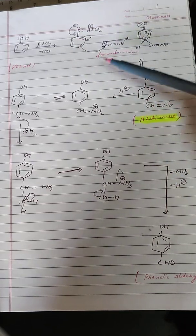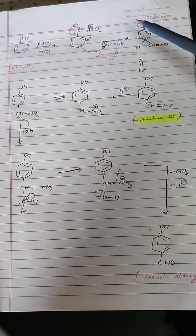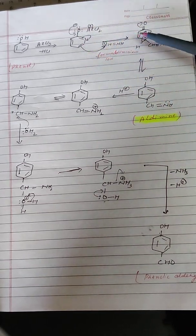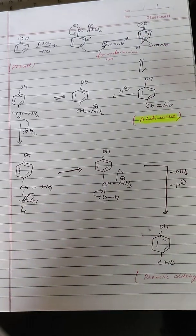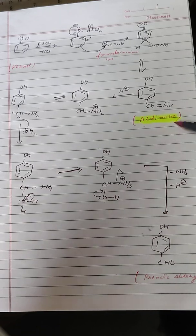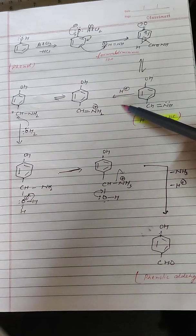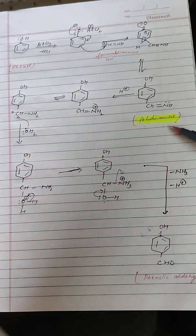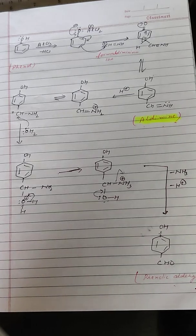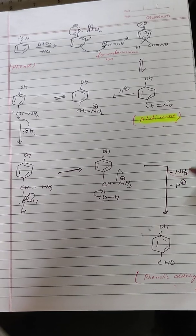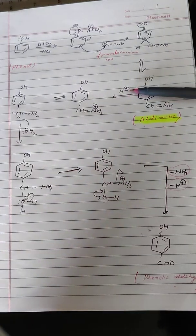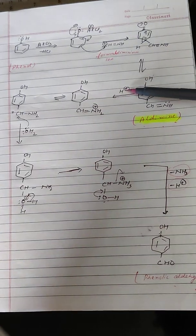The formiminium ion attacks the benzene ring — at the para position, possibly due to steric reasons — to give an aldimine, which then hydrolyzes with mineral acid to give the phenolic aldehyde. The mechanism shows this aldimine hydrolysis, yielding the phenolic aldehyde as the final product with elimination of one molecule of ammonia. Thus, only a catalytic amount of acid is used.